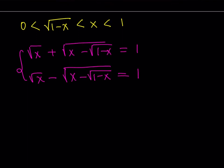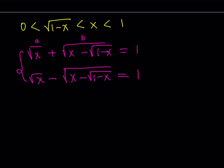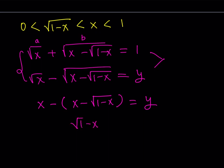If you multiply these two expressions — call this a and the second one b — then a plus b times a minus b, from difference of two squares, gives a squared minus b squared. That should look like: x minus the quantity (x minus the square root of 1 minus x). The product is 1 times y, which equals y. When you subtract and simplify the x's, you get the nice result: the square root of 1 minus x is equal to y.